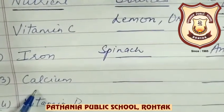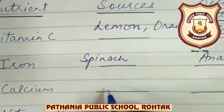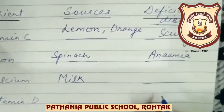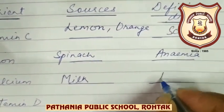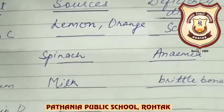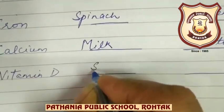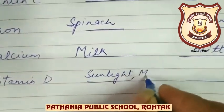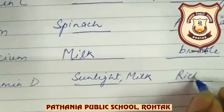Calcium — found in milk and milk products. The deficiency disease is brittle bones. Vitamin D — also found in sunlight and milk and milk products. The deficiency disease is Rickets.